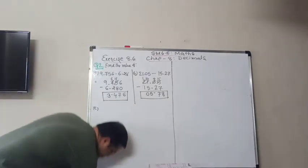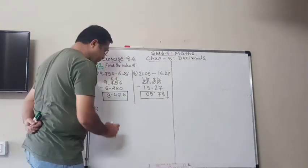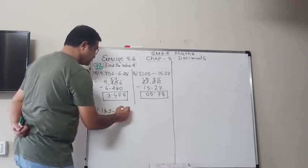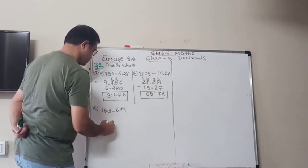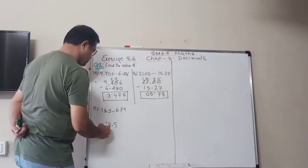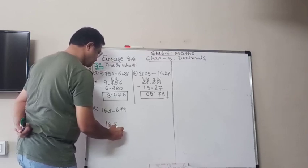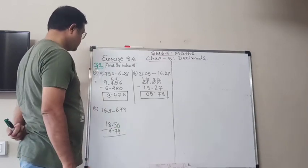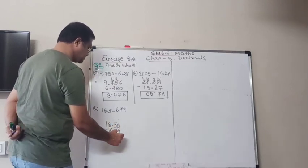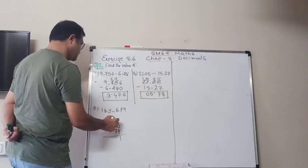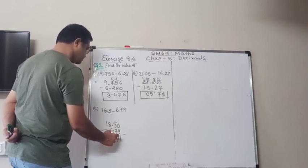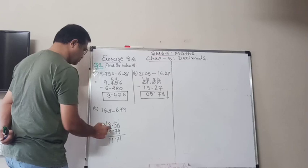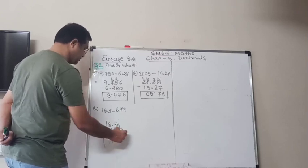C, third one, 18.5 minus 6.79. So 18.5 minus 6.79. So here we can put 0 for the easier way. Now 10, 10 minus 9 is 1, 4, so 14, 14 minus 7 is 7. Here it will be 7, 7 minus 6 is 1, and here 1 minus 0. If you want to put 0 or it is fine if you are comfortable with it.